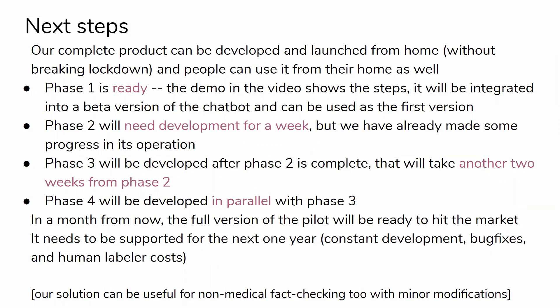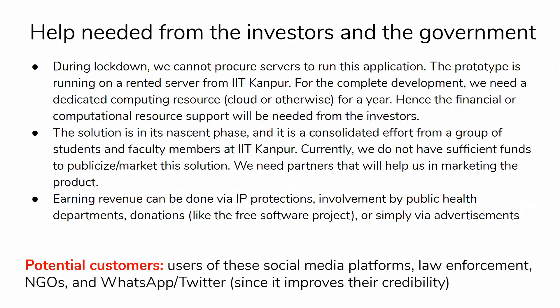The third phase will take about two weeks from the second phase, and the fourth phase will be developed in parallel with the third. The potential customers would be users of social media platforms like WhatsApp, as well as law enforcement organizations, NGOs, and social media organizations like WhatsApp and Twitter. Revenue can be earned through IP protections, involvement from public health departments, donations, or advertisements.